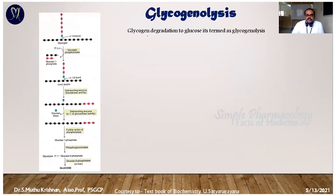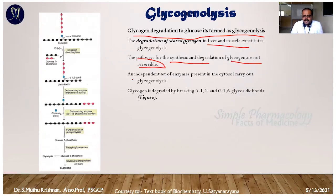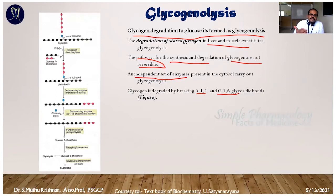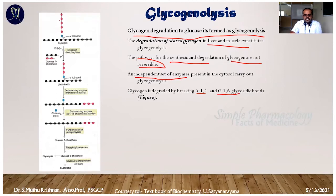This is the glycogenolysis pathway diagram — glycogen degradation into glucose. Glycogenolysis is carried out by a set of enzymes present in the cytosol. Glycogen is degraded by breaking alpha-1,4 and alpha-1,6 glycosidic bonds. During glycogenesis, chain elongation occurs via 1,4 linkage and branching via 1,6 linkage. In glycogenolysis, the same bonds are cleaved — 1,6 bonds for sub-branches and 1,4 linkage for the linear chain.